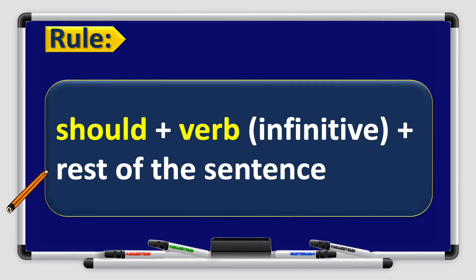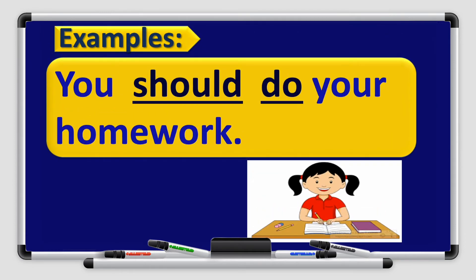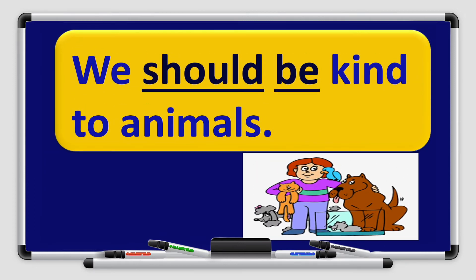Let's have some more examples. 'You should do your homework.' 'You' is the subject, 'should' is the modal verb, 'do' is the verb in the infinitive form, and 'your homework' is the rest of the sentence. Another example: 'We should be kind to animals.' 'We' is the subject, 'should' is the modal verb, 'be' is the verb in the infinitive form, and 'kind to animals' is the rest of the sentence.